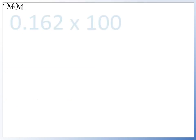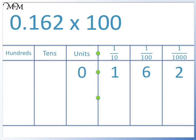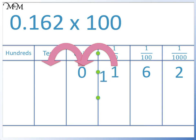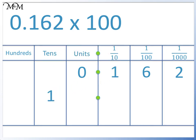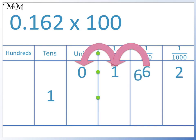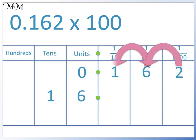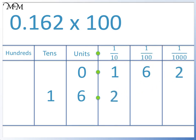Question 4: 0.162 times 100. We move each digit two places to the left. We will start with the 1, and the other two digits can now follow. 0.162 times 100 equals 16.2.